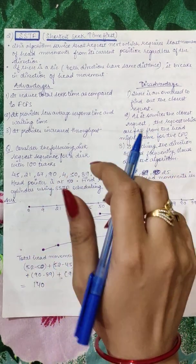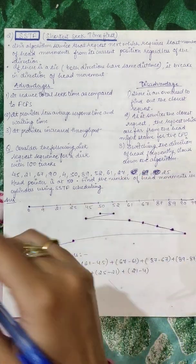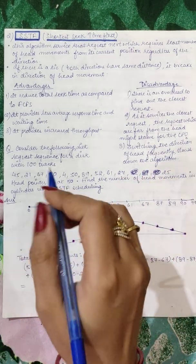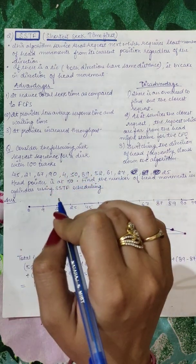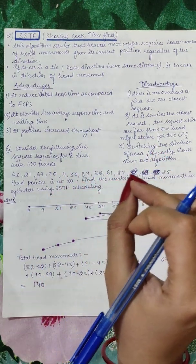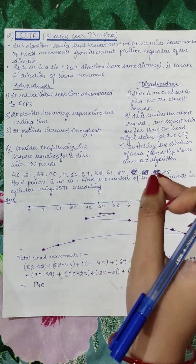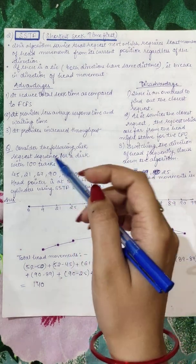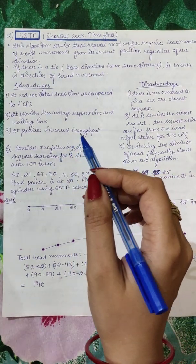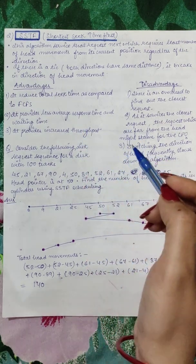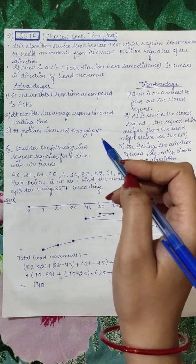If we go to the distance of the track and then come back, because FCFS is the one that came in order, then head will move accordingly. But in SSTF, what is the shortest seek time? The seek time will be reduced. That means where we have to travel less tracks, we will go in that direction. After that, we will come to the next, which is closest. So what will happen? The average response time and waiting time will be better. It provides increased throughput.